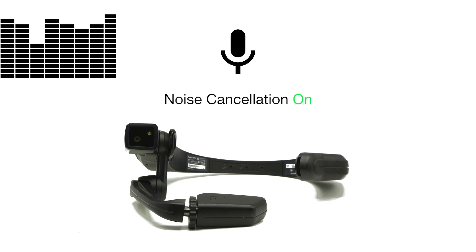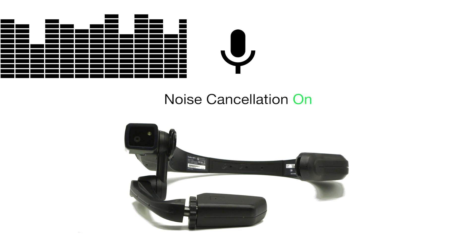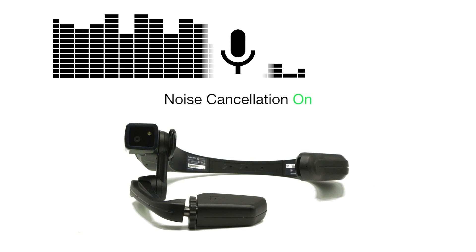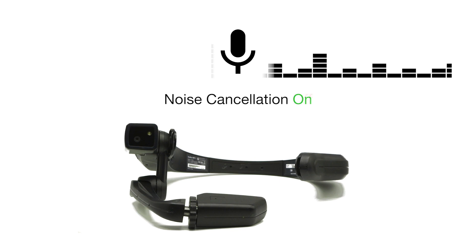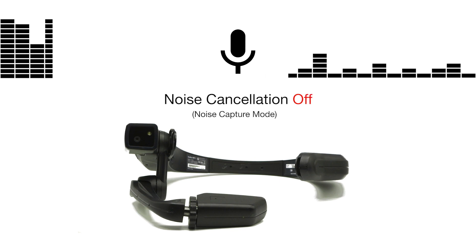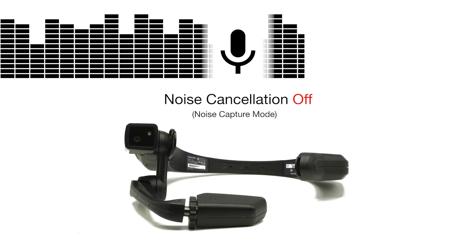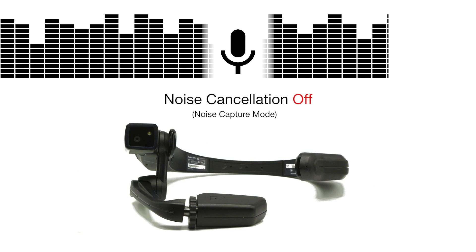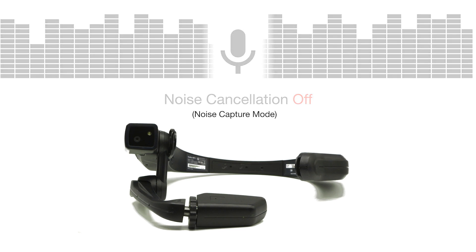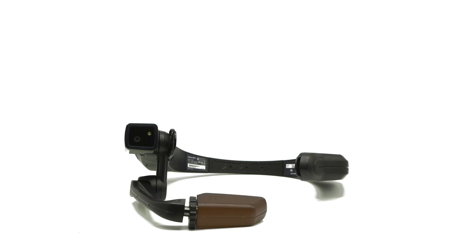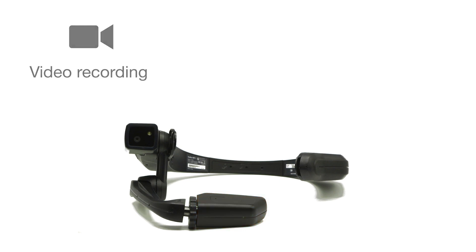Your HMT is already equipped with noise cancellation abilities that block ambient sounds from your microphone. The Noise Capture feature disables those noise cancellation capabilities, enabling your microphone to capture surrounding noises during video recordings or video streams.